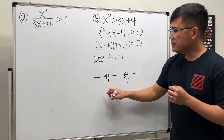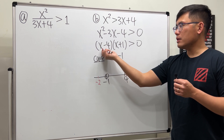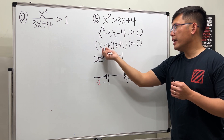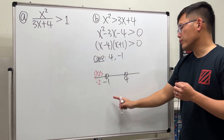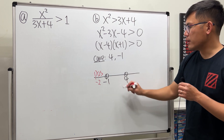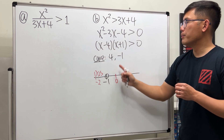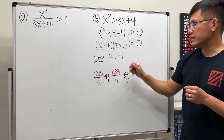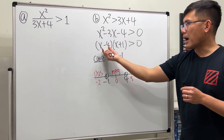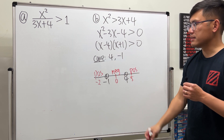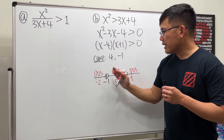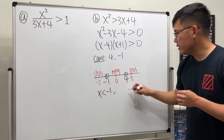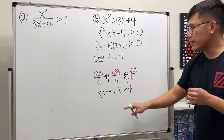Pick a number less than -1, say -2: (-2 - 4) = -6, negative; (-2 + 1) = -1, negative. Negative times negative is positive. Between -1 and 4, pick 0: (0 - 4) = negative, (0 + 1) = positive — negative. Pick a number bigger than 4, say 5: both factors are positive, so positive. We want the positive regions.